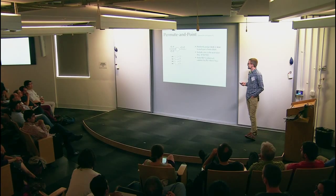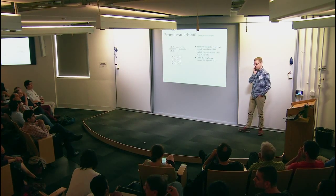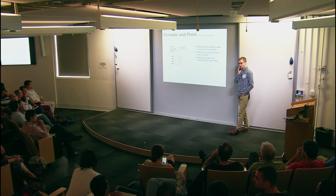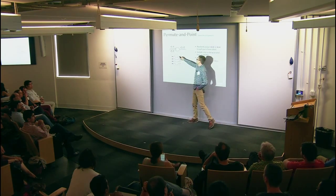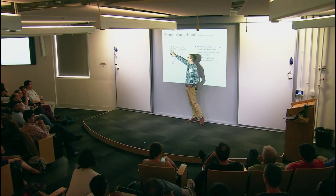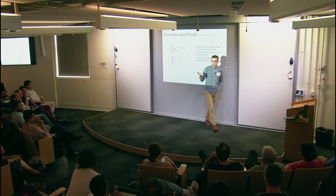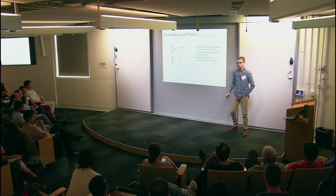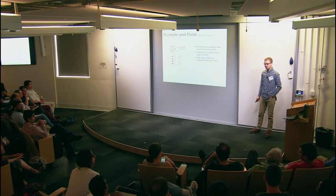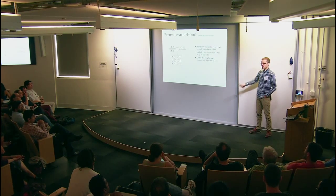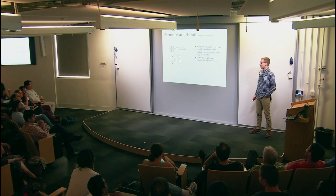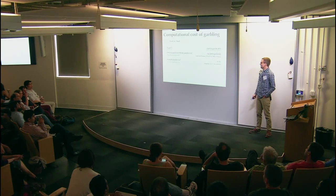Addressing a question about point-and-permute colors: the color is chosen randomly and independently of the semantic value. Blue might be true on one wire and false on another — so it can be the basis of ordering the ciphertexts without leaking semantic information.